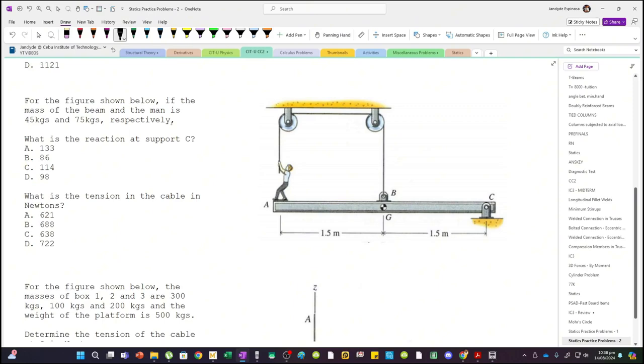First, the man has weight. The mass of the beam and the man is 45 and 75 respectively. So this is for the beam and this is for the man, 75 kilograms.